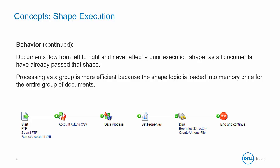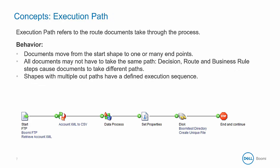Group processing of documents is a more efficient method of executing a process. The execution path is the route documents take through a process. Each document will begin at the start shape and move to one or many end points. Different documents can and often will take different paths through your process. Routing shapes like decision, the route, or business rule shape can cause different documents to take different paths. In a branch shape however, all successful documents move down every branch of the shape.